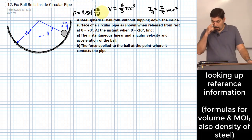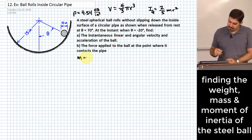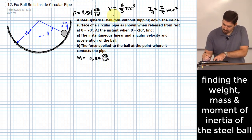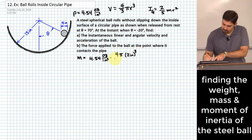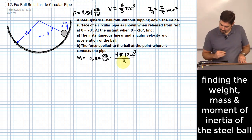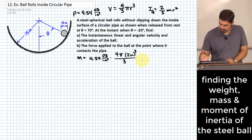Let me first find mass. Mass equals density times volume: 4.54 ounces per cubic inch times four pi times (2 inches cubed) divided by 3. Then we convert to pounds — there are 16 ounces in a pound.